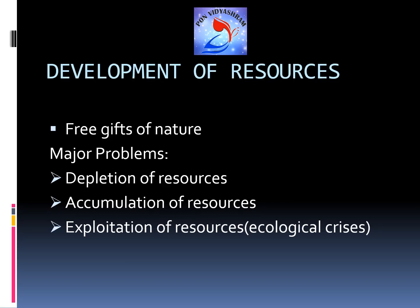The next topic is development of resources. Resources are considered free gifts of nature, so we use them indiscriminately and overuse them in many places, leading to major problems. The first problem is depletion of resources — since most resources we use are non-renewable, continuous use leads to exhaustion. The second is accumulation of resources: resources are not equally distributed throughout the nation, so resource-rich areas become wealthy while others become poor. The third is exploitation of resources, which leads to a global ecological crisis — global warming, ozone layer depletion, environmental pollution, and land degradation.